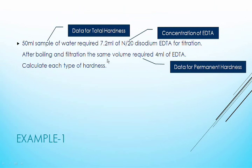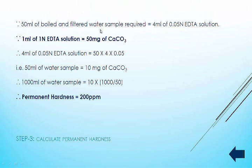After boiling and filtration, the same volume — 50 ml of water sample — required 4 ml of EDTA solution. This data will give us permanent hardness. We know that 1 ml of 1 normal EDTA solution corresponds to 50 milligrams of calcium carbonate. Therefore, for 4 ml of 0.05 normal EDTA solution: 50 × 4 × 0.05 = 10 mg of calcium carbonate equivalent hardness.